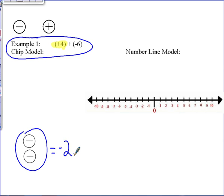Now let's use the number line model, which is also known as the distance and direction model, to represent the same problem: positive 4 plus negative 6. Our starting point will be positive 4 and we are moving a distance and direction of negative 6. Since it is negative, we will be moving to the left on the number line 6 places.